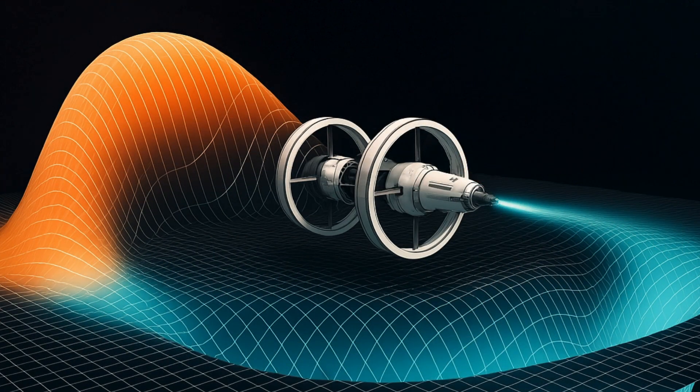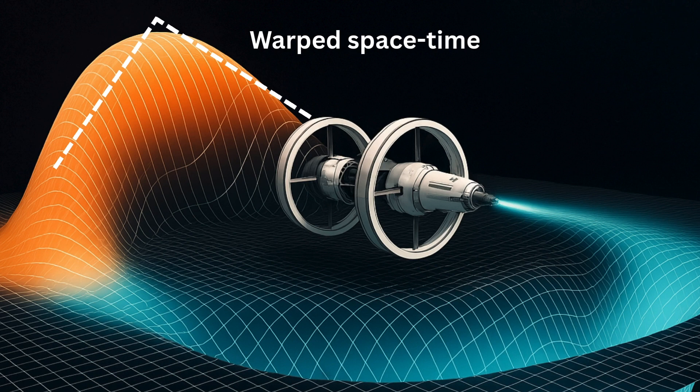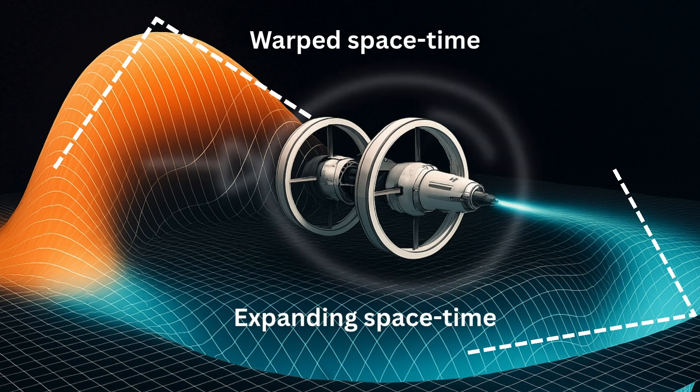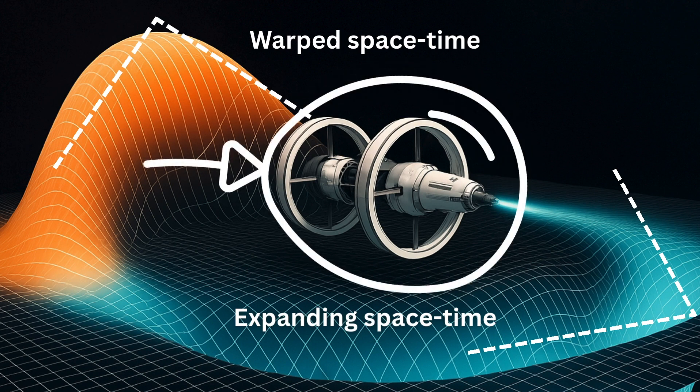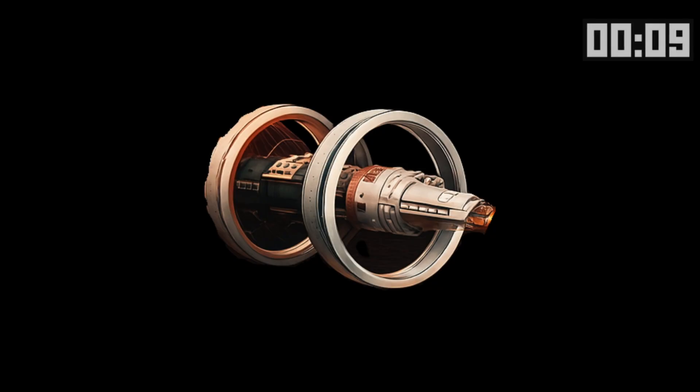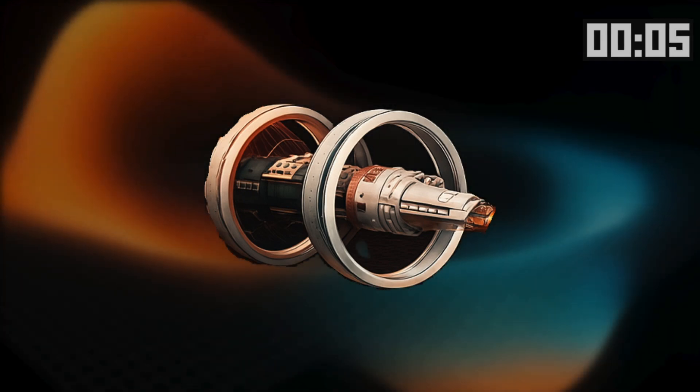So in summary, the ship doesn't actually move. Space moves around the ship. And because of that, it doesn't technically exceed the speed of light. The travel time would likely depend on how efficiently the warp drive can operate. In theory, you could reach a destination a million light years away in just 10 seconds.